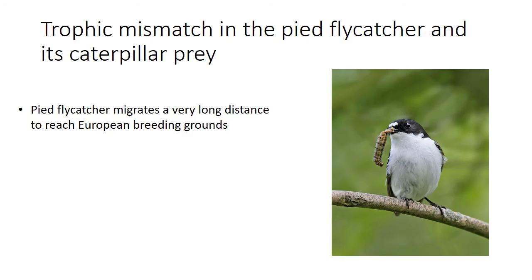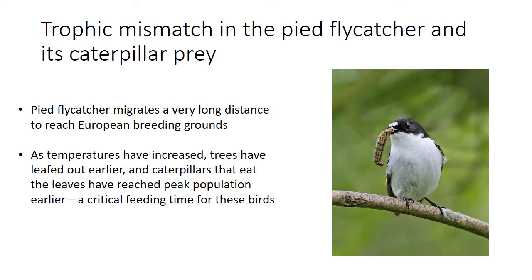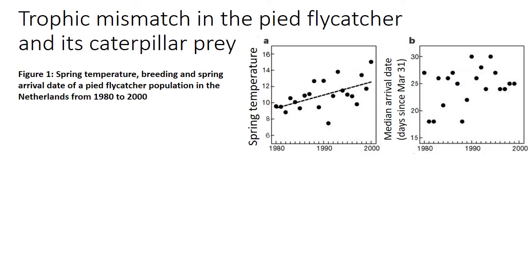Another example in which trophic mismatch has led to a significant decline in fitness is seen in the migratory pied flycatcher. This bird migrates long distances to reach European breeding grounds in summer. As temperatures have increased, trees are leafing out earlier and the caterpillars that eat those leaves have also responded to temperature, reaching peak populations earlier. This period of peak caterpillar population is a critical feeding time for pied flycatchers, which use caterpillars as the main food source while breeding and feeding their young.